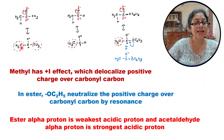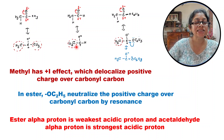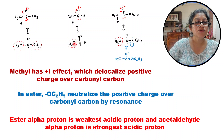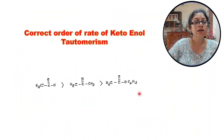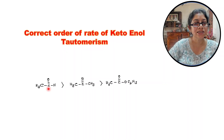Comparing acetone and acetaldehyde: acetone has two methyl groups giving two +I effects, but acetaldehyde has only one methyl giving only one +I effect. So the positive charge of acetaldehyde is less delocalized than that of acetone, meaning the alpha hydrogen of acetaldehyde is more acidic. Therefore the correct order of rate of keto-enol tautomerism is: acetaldehyde is fastest and ethyl acetate is slowest. Thank you very much.